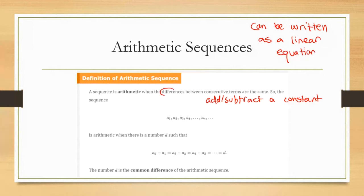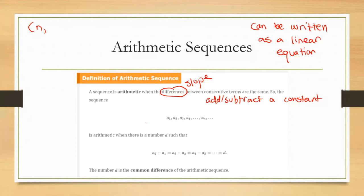The difference is basically the slope if you think of the sequence in terms of a linear equation. You can consider the term number as your input and the value at that term as the output — so the first term would be input 1 and whatever that number is as the output. That allows you to use the slope formula and get the equation based on the equation of a line.